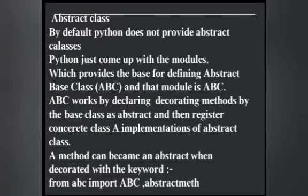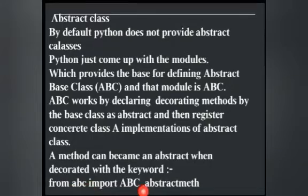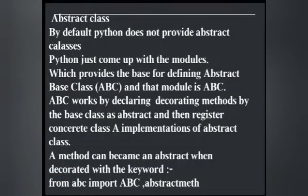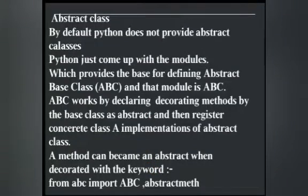A method can become abstract when decorated with the abstractmethod keyword. We write: from abc import ABC, abstractmethod. Remember that ABC is written in capital letters. We construct the class using ABC and import it from the small-letter abc module. So we access it from the abc module to use abstract classes.